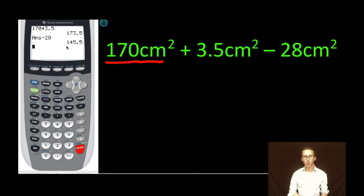Now our calculator gives us 145.5. It needs to be rounded to match the precision of the least precise measurement which was this one. So how do I round this number to the tens place? If you guessed 150 square centimeters you would be correct. Notice the precision matches the least precise measurement.